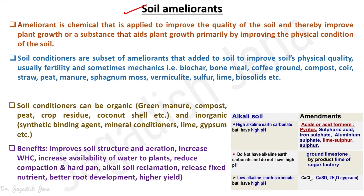Soil conditioner, on the other hand, is mostly applied to increase the physical property of the soil — the physical quality of the soil. Ameliorant can be anything: lime can be an ameliorant, and lime is mostly used for reclamation of acid soil. Leaching can act as an ameliorant in the case of saline soil. For sodic soil, gypsum, iron pyrite, and elemental sulfur can act as ameliorants.